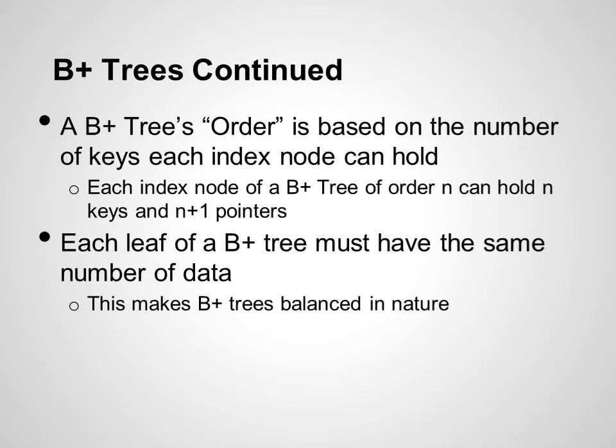A B plus tree's order is based on the number of keys each index node can hold. Each index node of a B plus tree of order n can hold n keys and n plus 1 pointers. An example of this would be a B plus tree with order 4 — it would be able to hold 4 keys and 5 pointers. Each leaf of a B plus tree must have the same number of data, which makes a B plus tree balanced in nature. This is important when considering how to organize data, since this makes it easier to access.